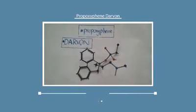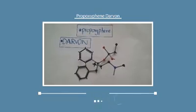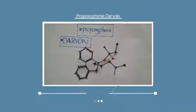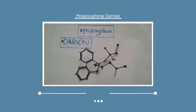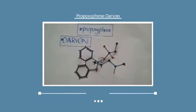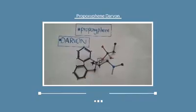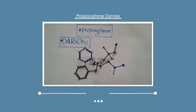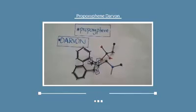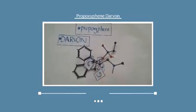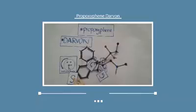Now I will explain the configuration of each chiral center in the Darvon isomer. Starting with chiral carbon one, the priority numbering is based on the highest atomic number bound directly to the chiral carbon. Oxygen has the highest atomic number, so it takes number one. Number two is for the benzyl ring, number three for a bond from the back, and number four for a bond from the front. The orientation is anticlockwise, so the configuration is S.